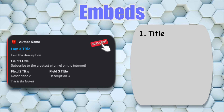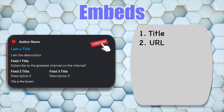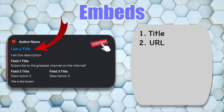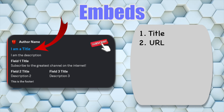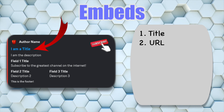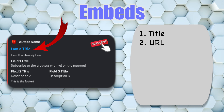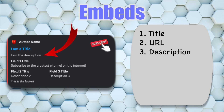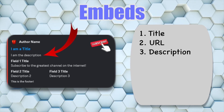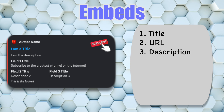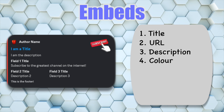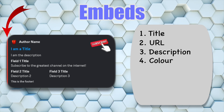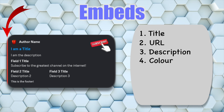Moving on to number two, we've got the URL. What's really cool here is if we click on the title it's actually a URL, so you can redirect users who use your bot to certain pages. Feature three is the description — it's a description of what the embed is about. Number four is the colour, which you can notice on the sidebar — you can set it to whatever colour you want.